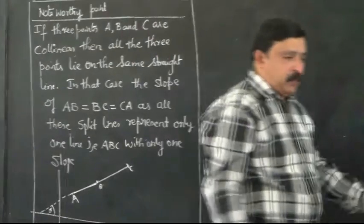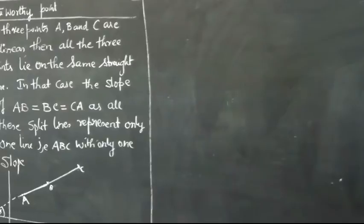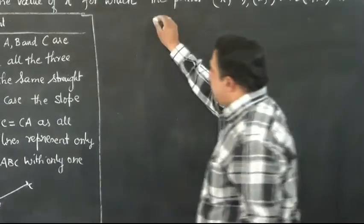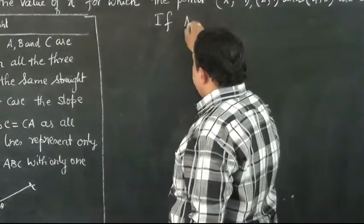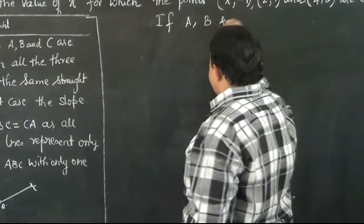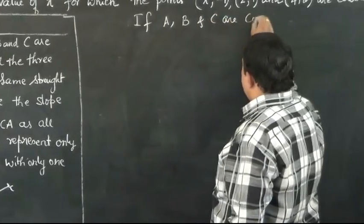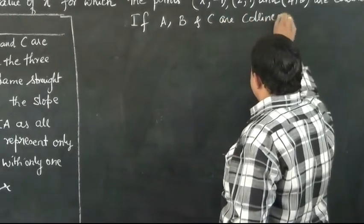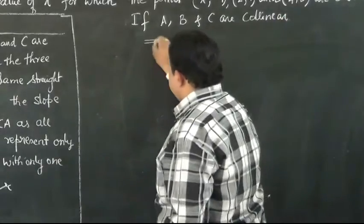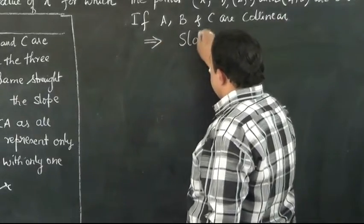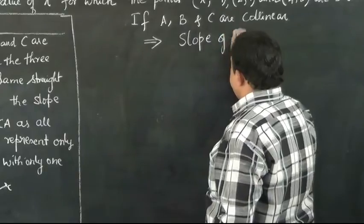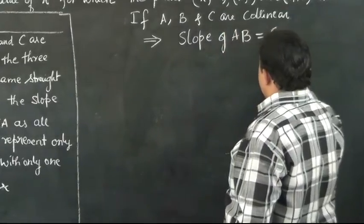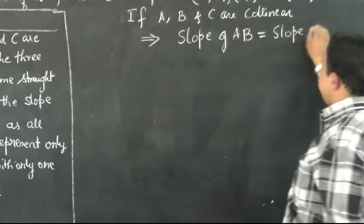So if A, B, C are 3 points which are collinear, then it follows that if A, B and C are collinear, it implies that you can take slope of AB equal to slope of BC.